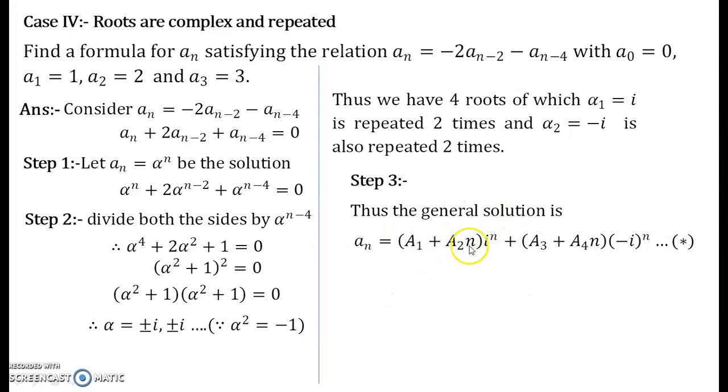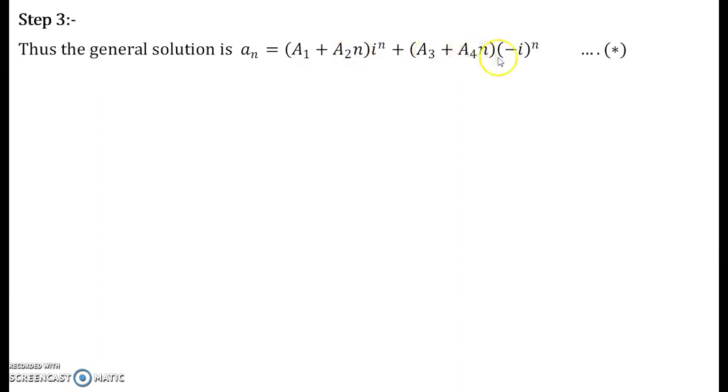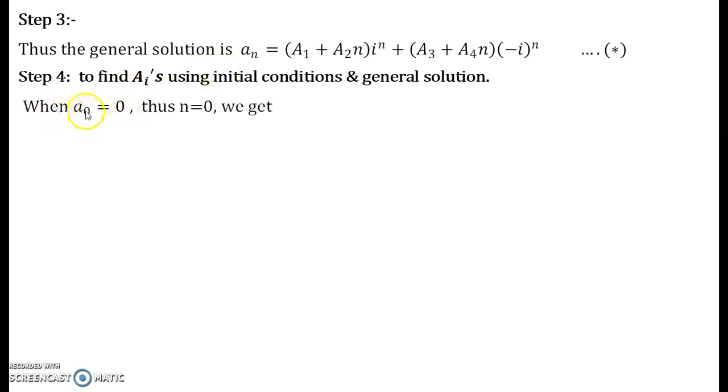Now in order to find A_1, A_2, A_3, A_4, we will use these 4 initial conditions along with the general solution. So let me rewrite this general solution once more over here and let us go for step 4 for finding the constants A_i's using initial conditions and the general solution. Now the first initial condition we had: a_0 = 0. Since the suffix n over here is 0, what you do is you plug up n = 0 in this general solution.